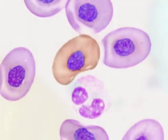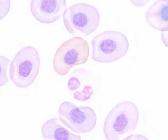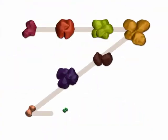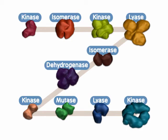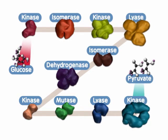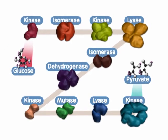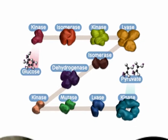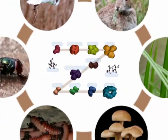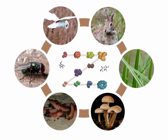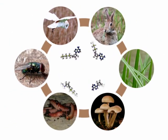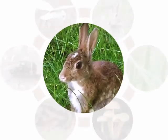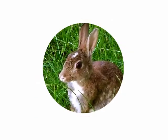As you can see, glycolysis is a process involving multiple enzymatic reactions that break down sugars. Its major contribution to biological organisms is the production of ATP, which is used to drive many other biochemical pathways.